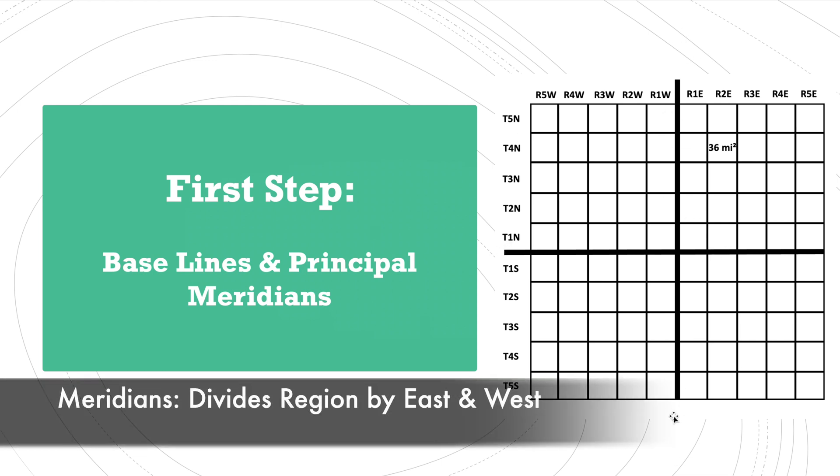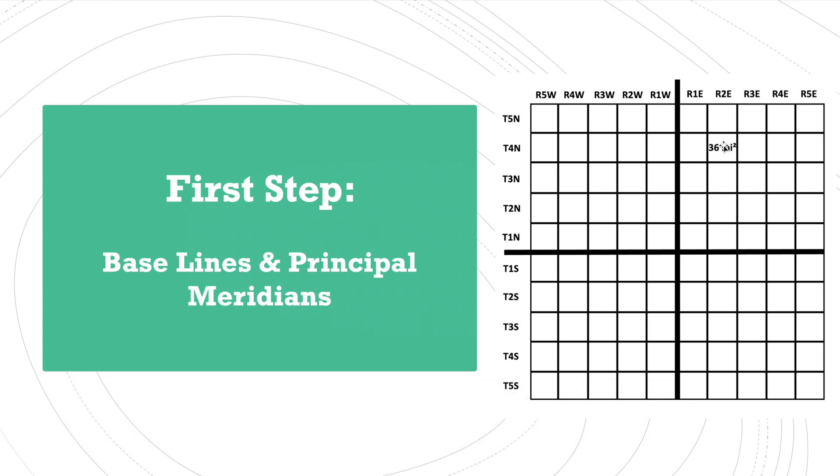Then our principal meridian divides everything either east or west of that region. So as an example, where that says 36, if I wanted to denote or identify that box, I would say that it is in Township 4 North and Range 2 East. Now that one box in particular has a value of 36 square miles. That's a really big box, it's six miles by six miles in area.